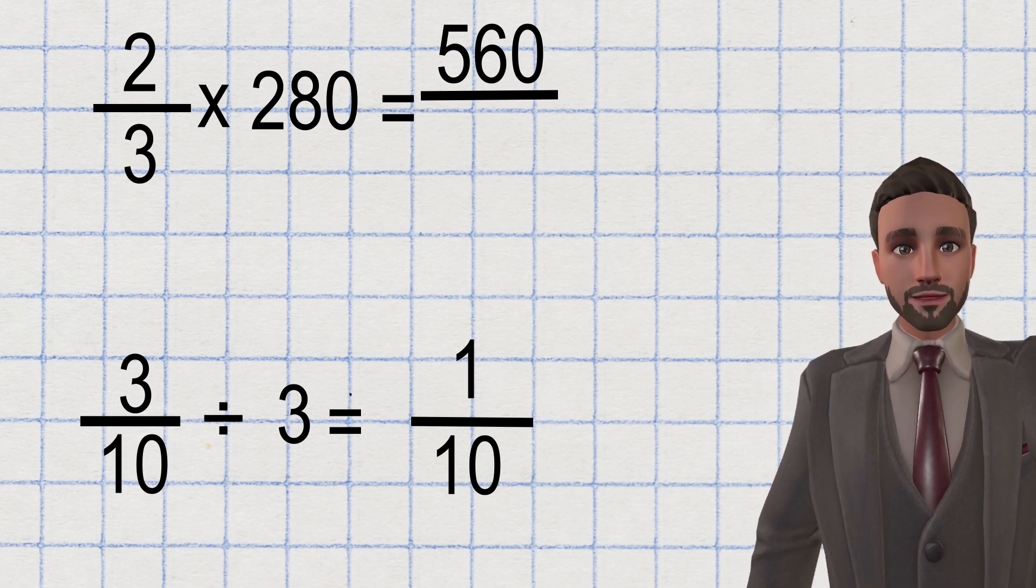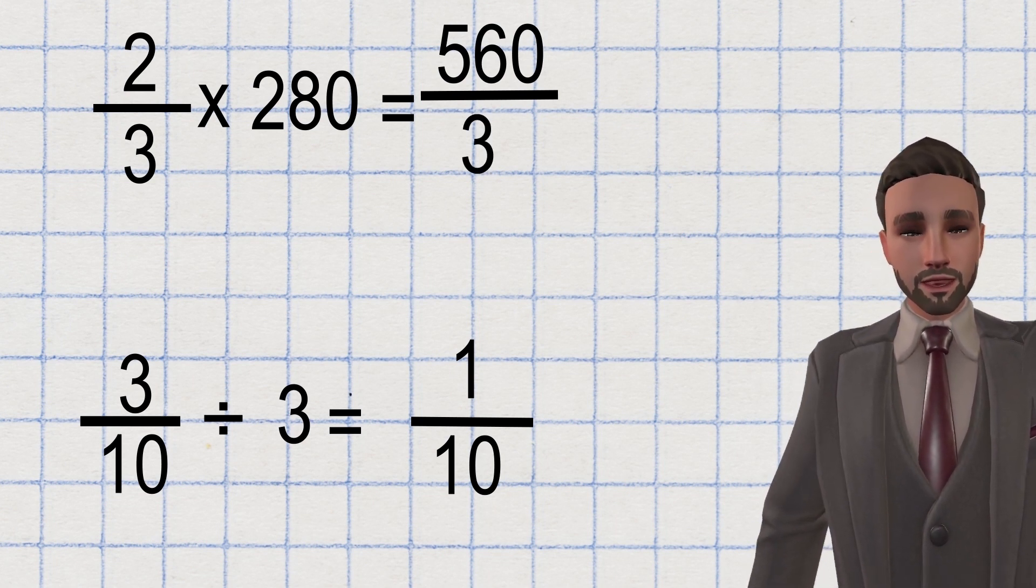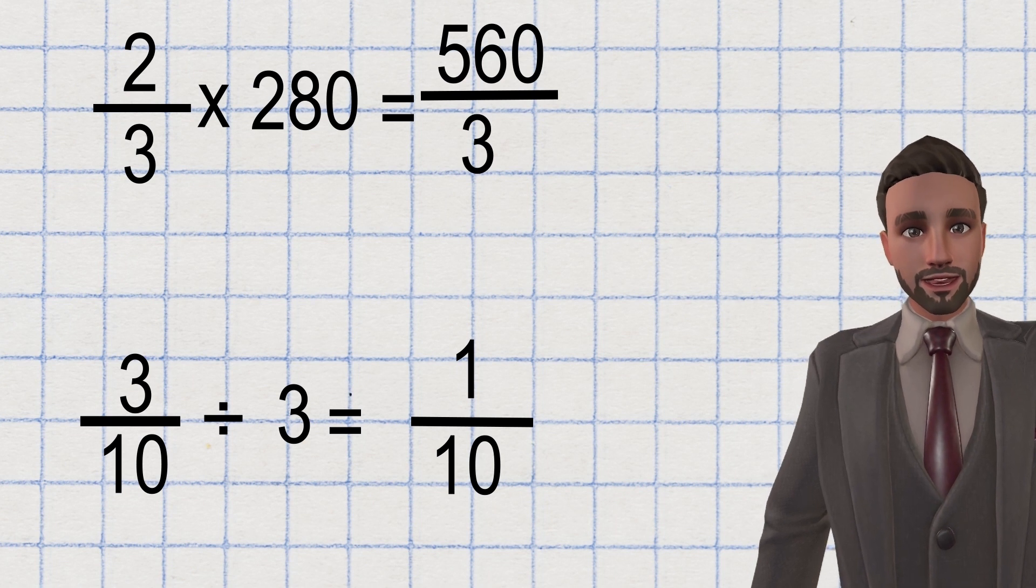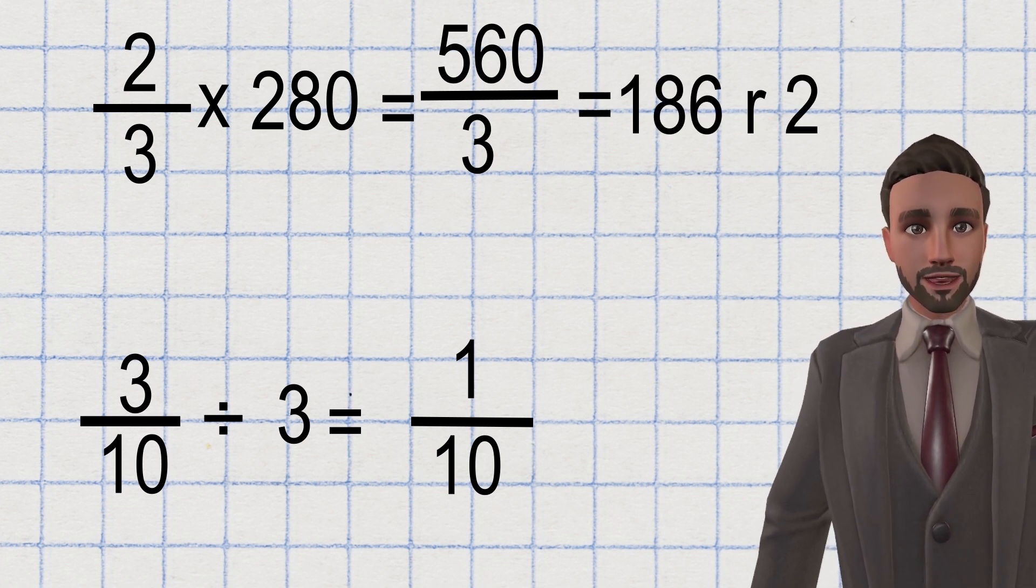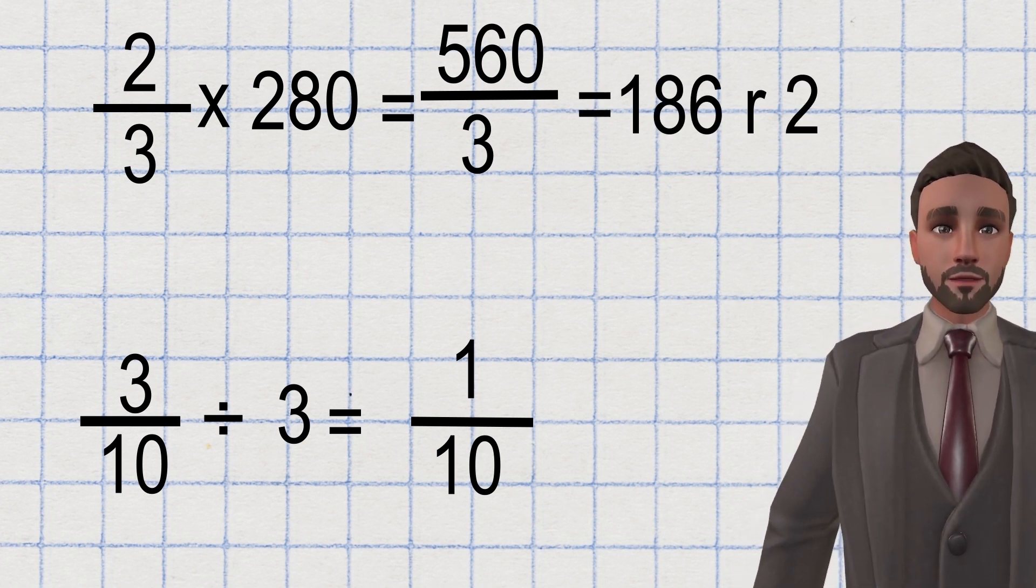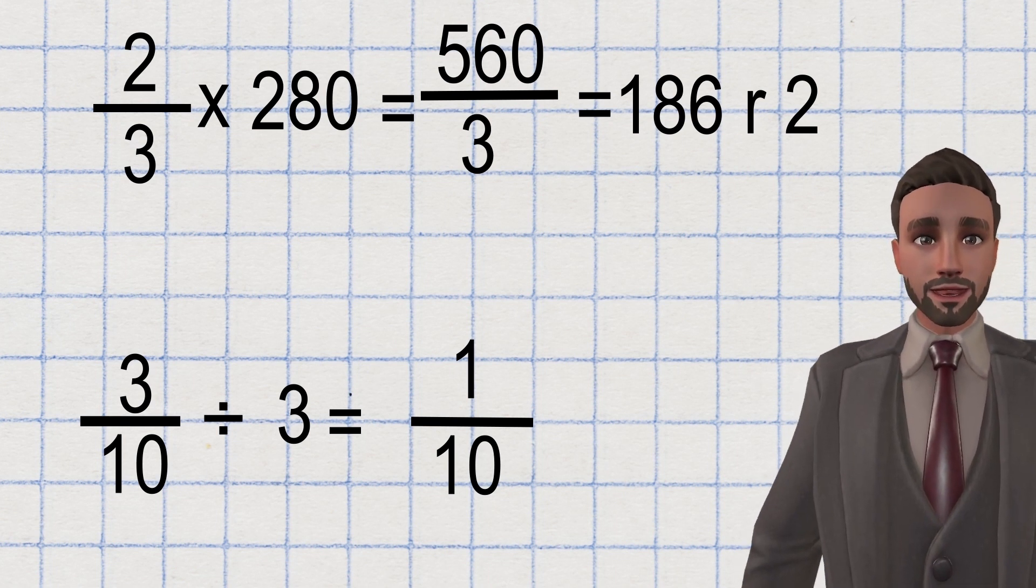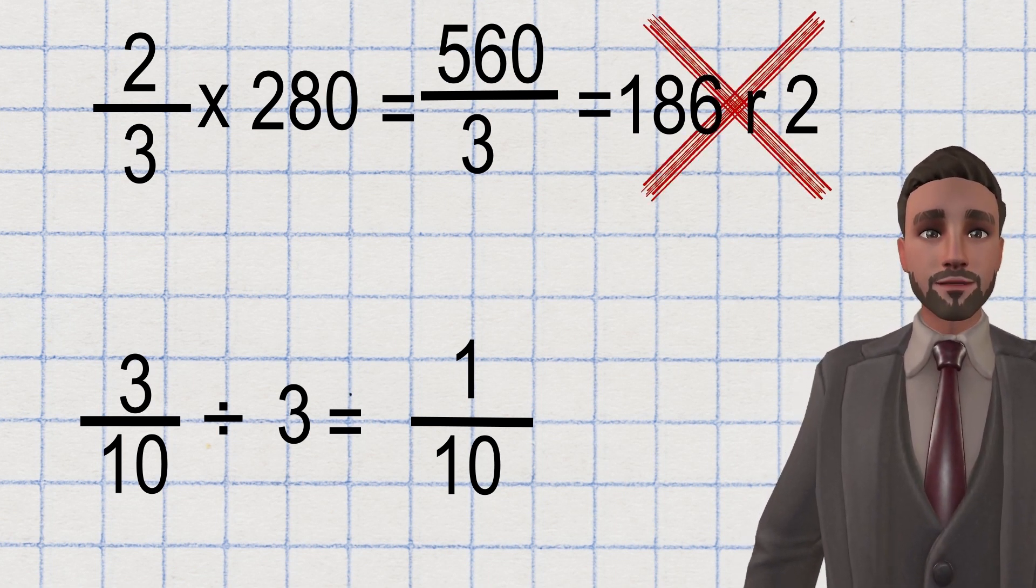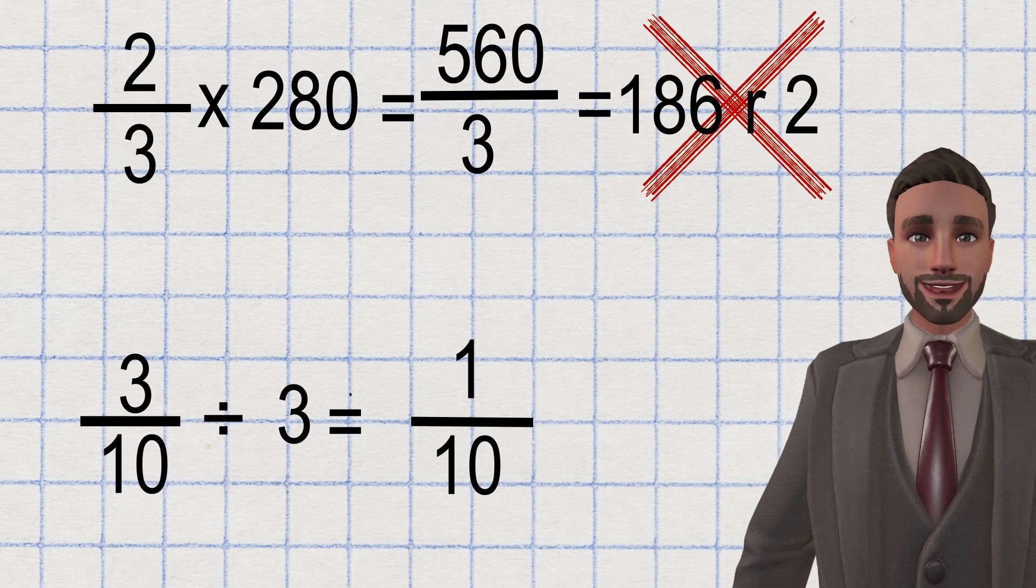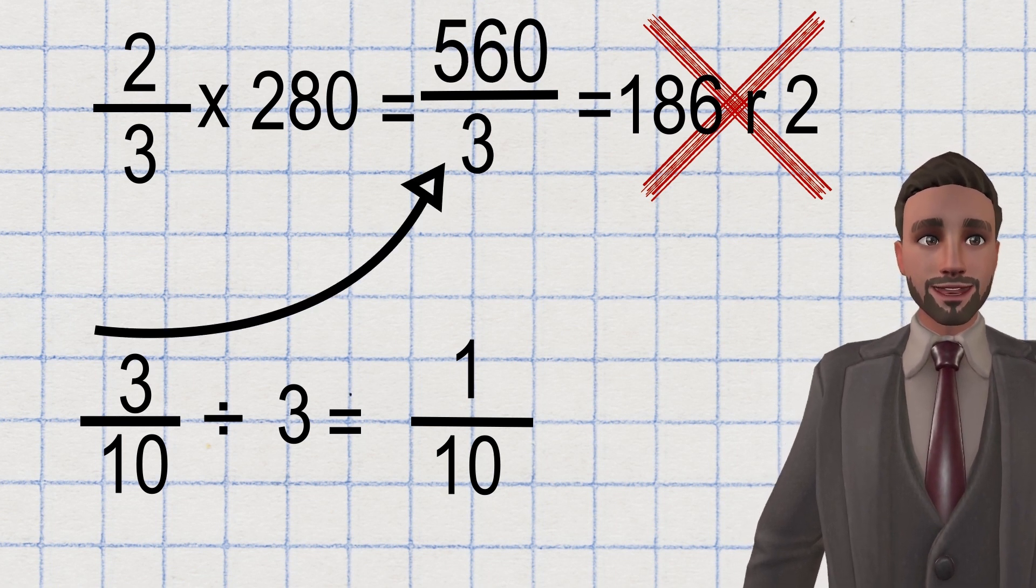Now 560 divided by three. Well, three doesn't go into 560. It would be 186 remainder two. So if divided by the denominator, the whole, my answer would leave me a remainder. That's when I know the test would be happy with me stopping at step one.